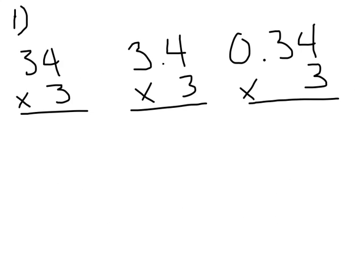Remember that decimal multiplication is exactly like whole number multiplication. We just have to look and see the correct place value for each one of our digits. To start, let's multiply 34 times 3. Well, 3 times 4 is 12. 3 times 3 is 9, plus one more is 10. 34 times 3 is 102.